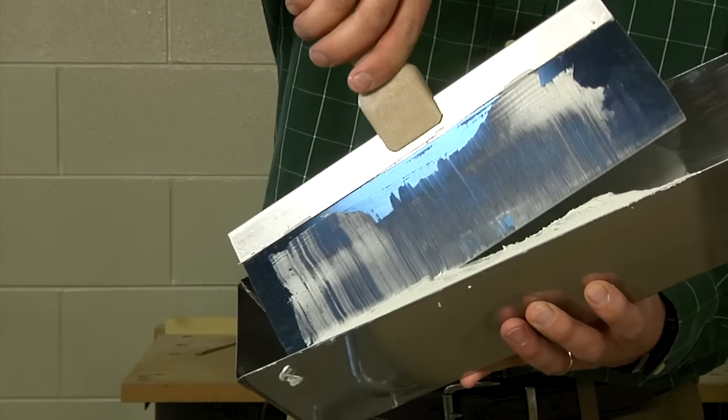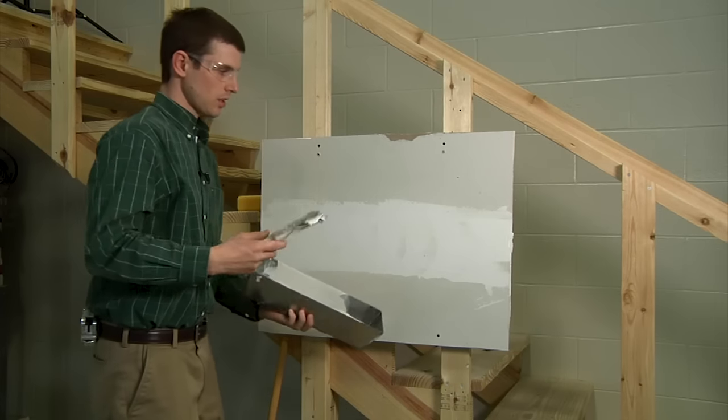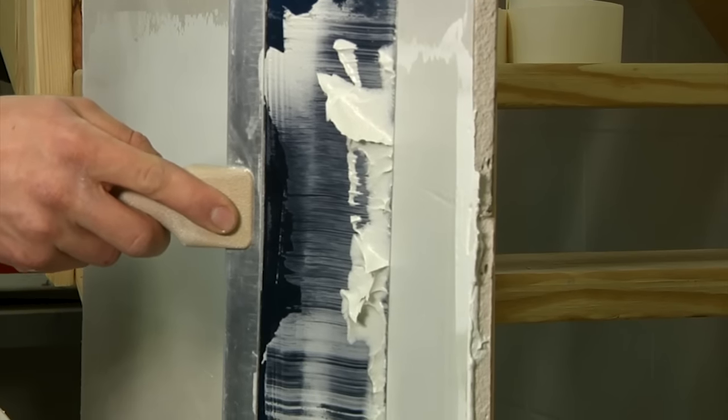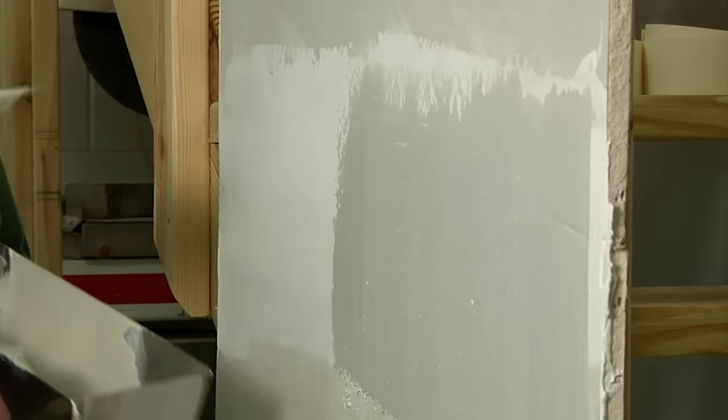Once I'm satisfied with the way the mud looks, I'm going to dig in and start on one side, working my way across, applying this compound. Same as before, as I work my way across, I'm going to flatten that knife out.